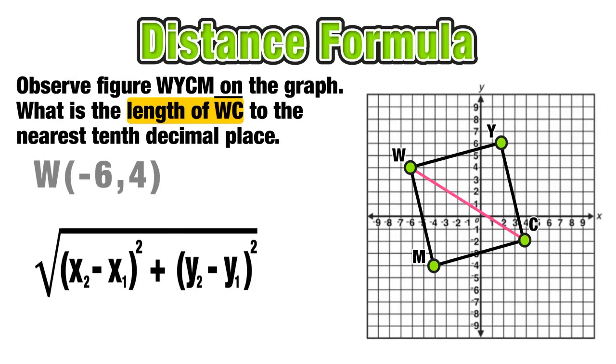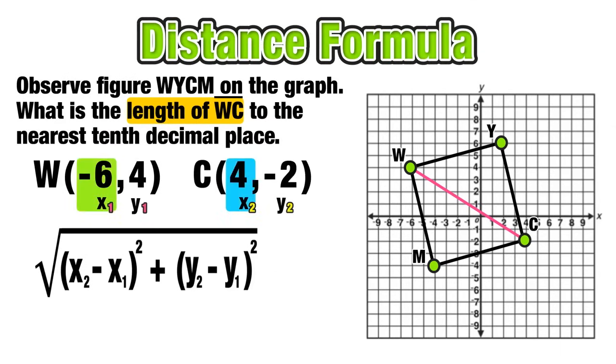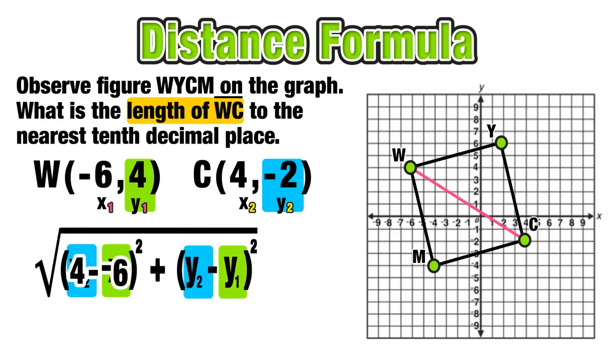Now we can write down the coordinates of W at negative 6, 4, that's your x1, y1. And C at 4, negative 2, that's your x2, y2. In the distance formula, we can now substitute x2 minus x1 is going to be 4 minus negative 6. Then on the right side of the distance formula, y2 minus y1 will be negative 2 minus 4.